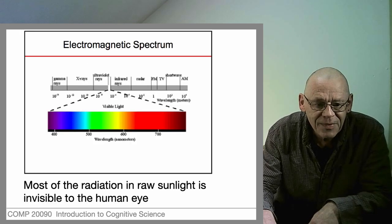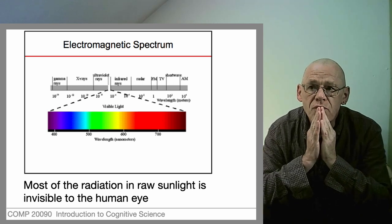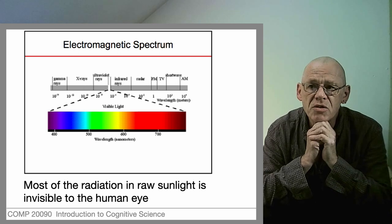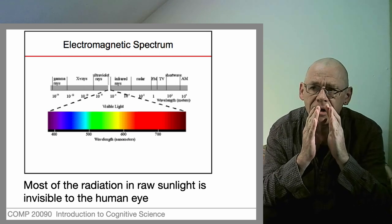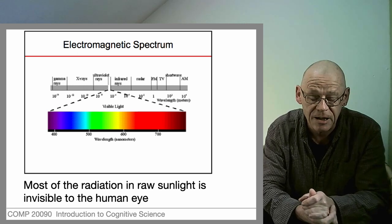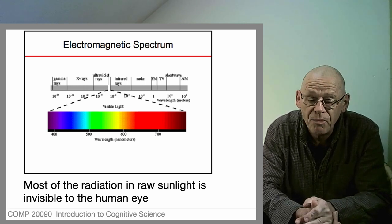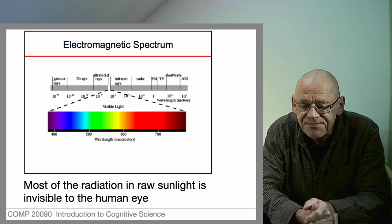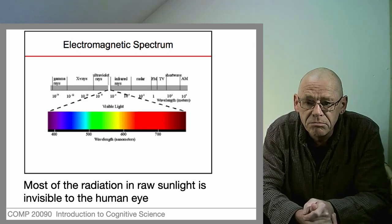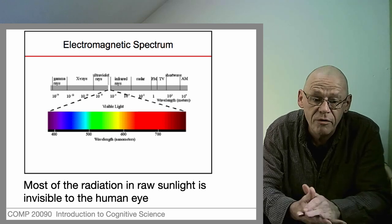We'll come back to that. The eye is sensitive to visible light, and visible light is only a very small part of the electromagnetic energy that we are bathed in, most of which comes from the Sun, some also from the stars.